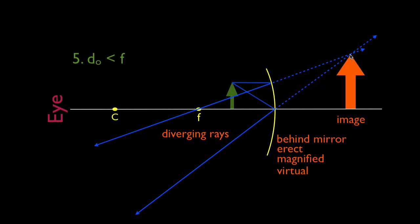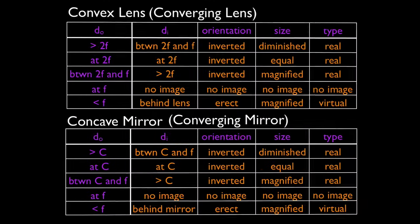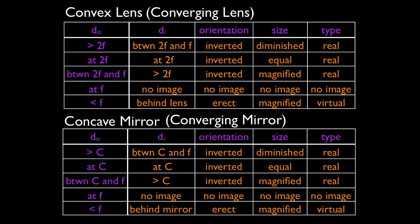Those are the five cases — you should now be able to draw them all carefully with a straight edge and sharp pencil. Here is a summary table for the concave mirror showing object distance versus image distance, orientation, size, and type. The table also shows the concave lens for comparison. Both are converging devices, and you should notice that the answers are exactly the same for the convex lens and the concave mirror.